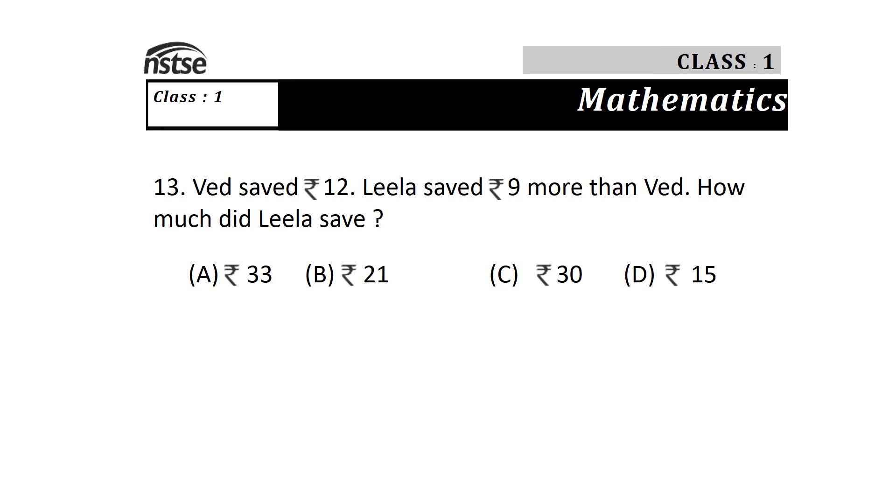Question 13: Ved saved Rs. 12 and Leela saved Rs. 9 more than Ved. How much did Leela save? Options are A) Rs. 33, B) Rs. 21, C) Rs. 30, and D) Rs. 15. Here it is given that Leela saved Rs. 9 more than Ved, so we add: 12 plus 9 equals 21. The answer is option B) Rs. 21.